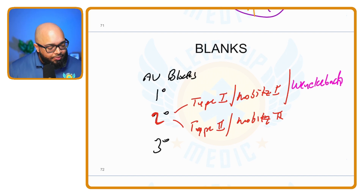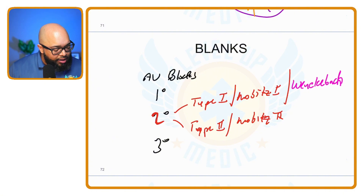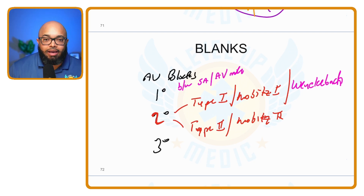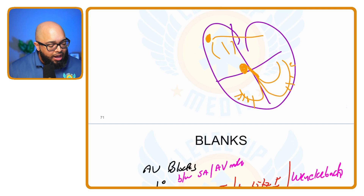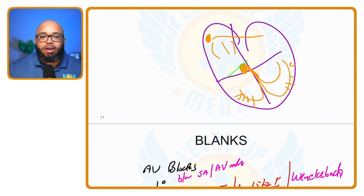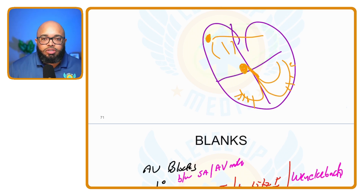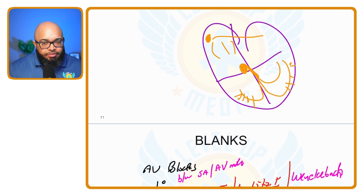A first degree block is where you have a partial block between the SA node and the AV node — usually just before the AV node. Everything still causes the atria to depolarize and contract.